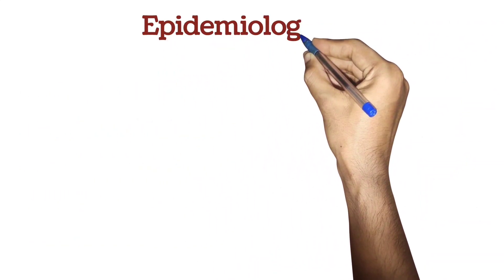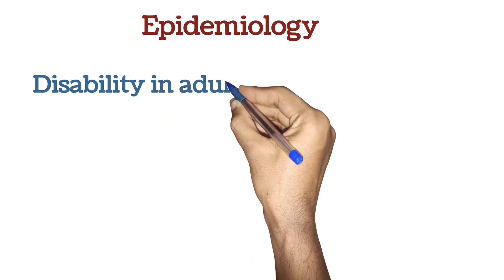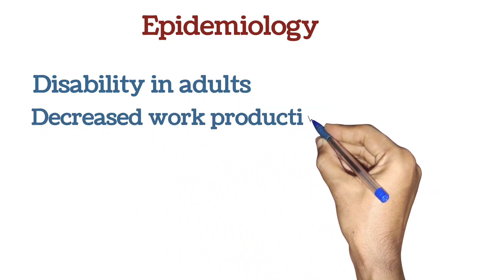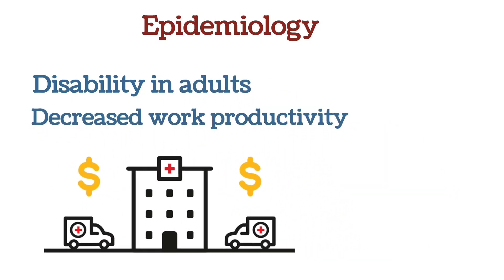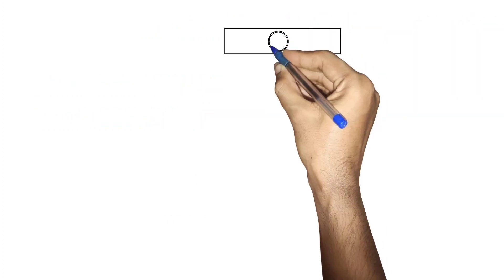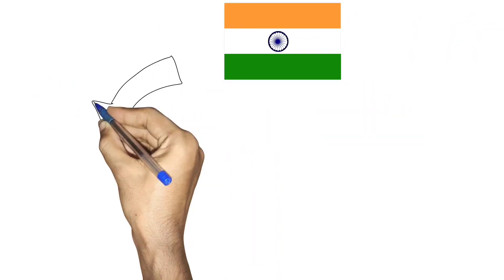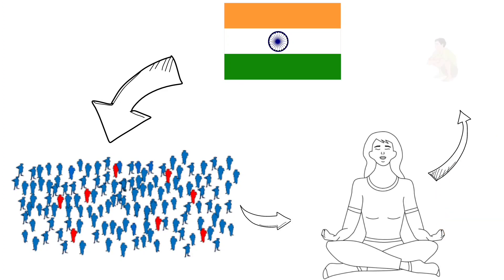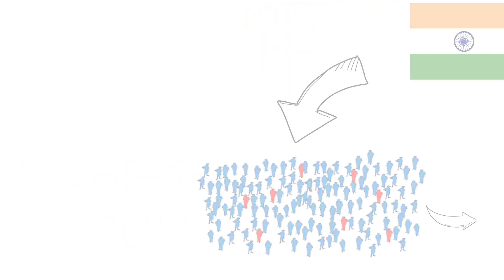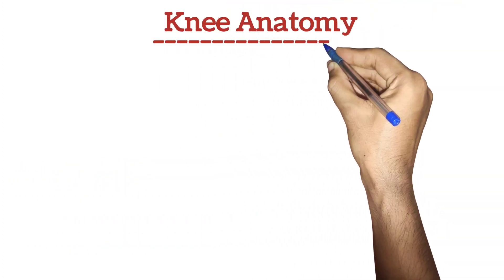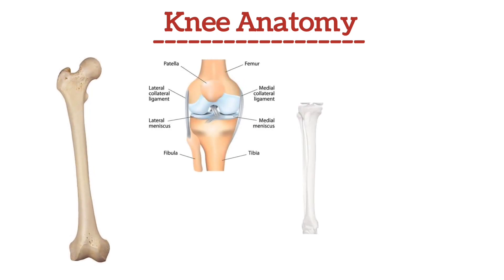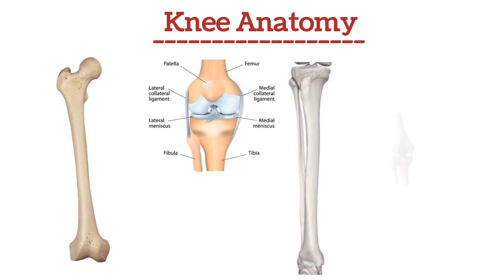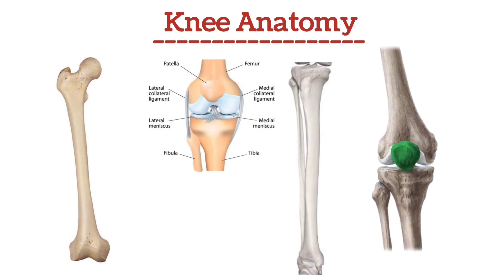Epidemiology: Knee OA is the most common cause of disability in adults, leading to decreased work productivity and increased medical expenses. In countries like India, the prevalence of OA is higher due to cultural habits like sitting cross-legged and squatting. The knee joint is formed by the femur, tibia, and patella, and understanding its structure helps in comprehending the pathological changes that occur in OA.